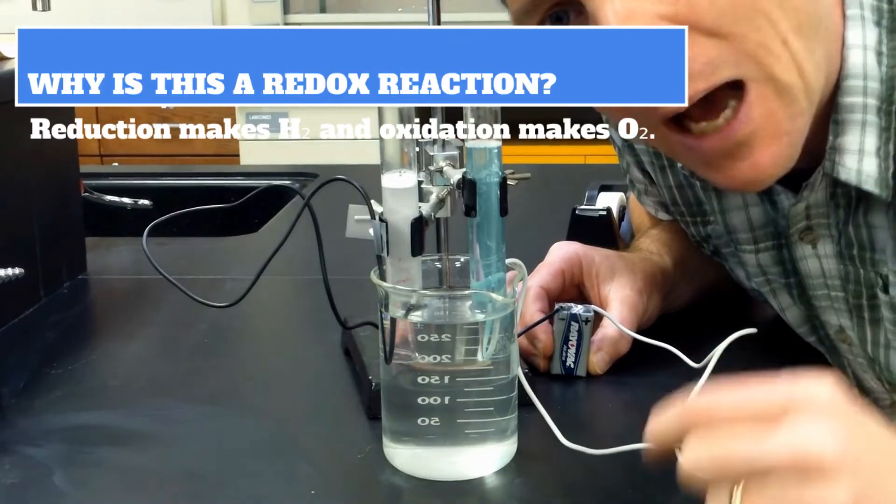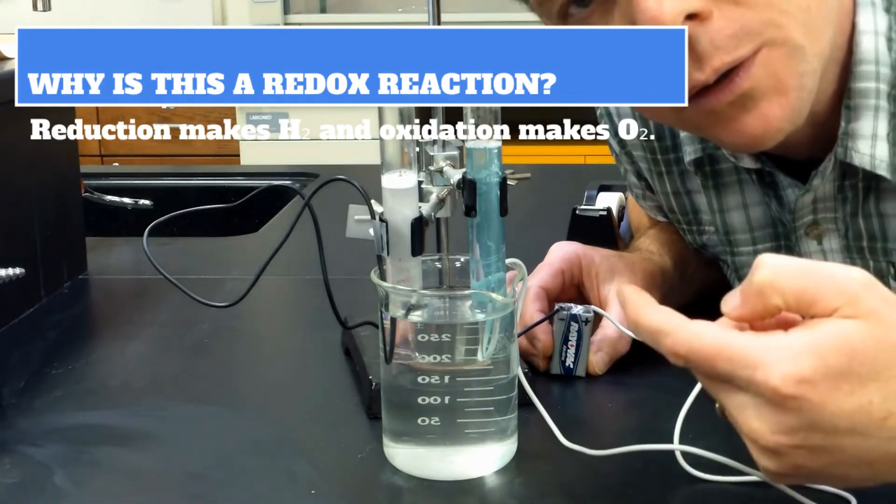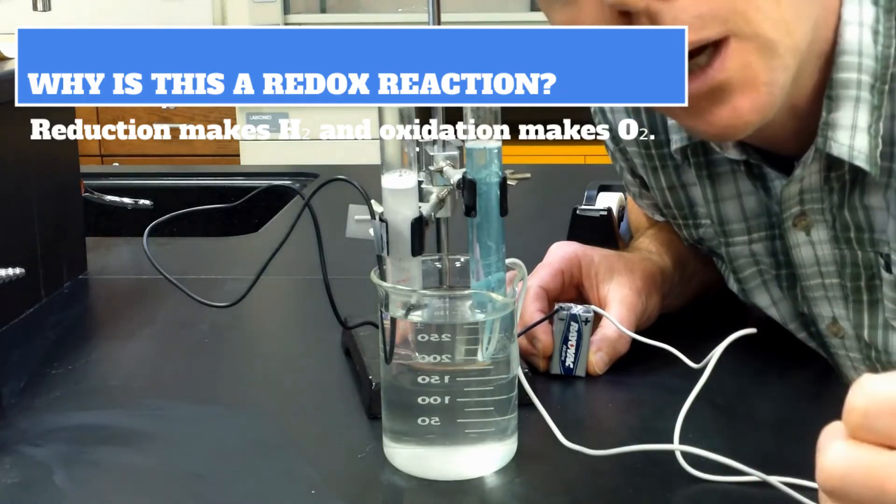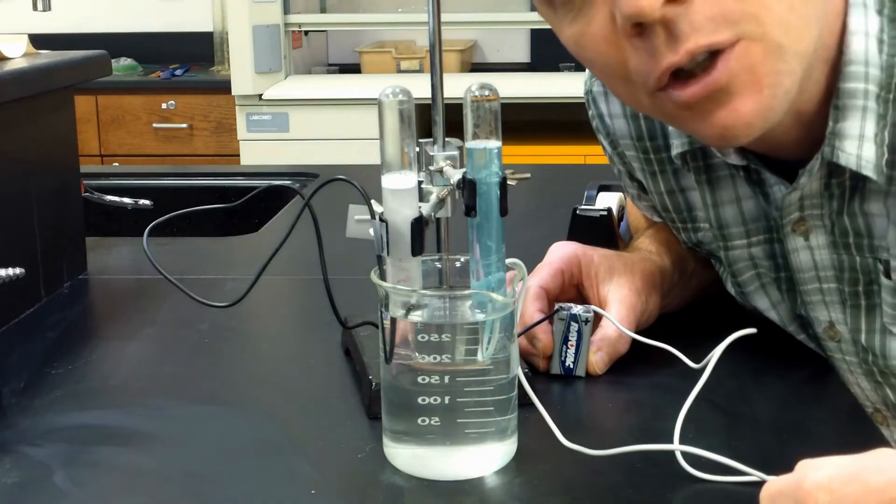At the anode, the opposite is happening. So here, electrons are being pulled from the water. Now this is causing the water to become oxidized, and this is leading to the formation of oxygen gas.